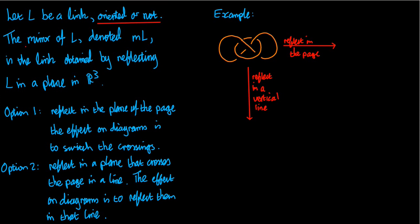So what is it? The mirror of L, and it's denoted by ML, is the link obtained by reflecting L in a plane in R3. So now we have to remember a link is a special kind of subset of R3.